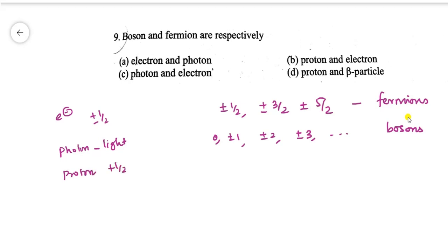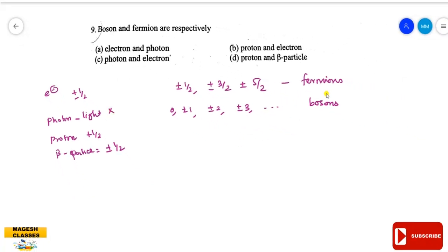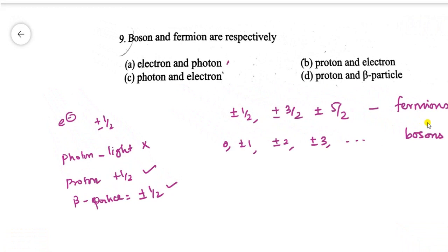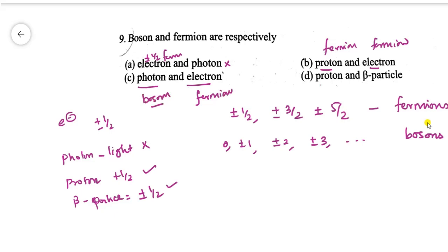Proton has spin plus half — it is a fermion. The beta particle is also a fermion. So electrons, protons, and beta particles are all fermions, while the photon is a boson. Proton and electron are both fermions. So the answer here is that photon is the boson and electron is the fermion — the correct option is photon and electron respectively.